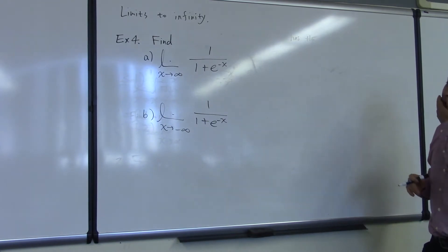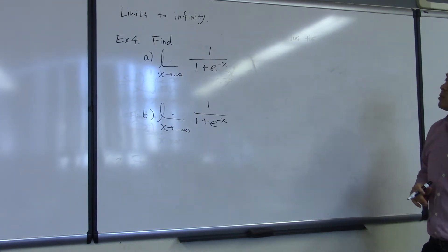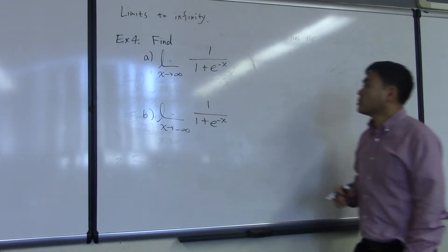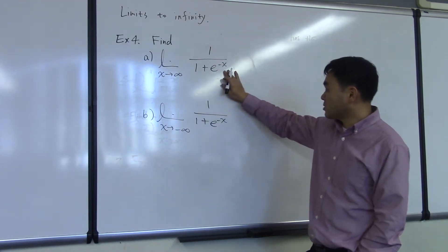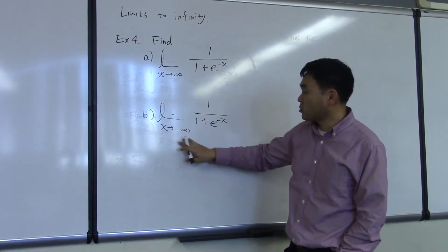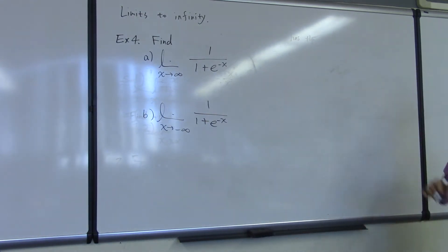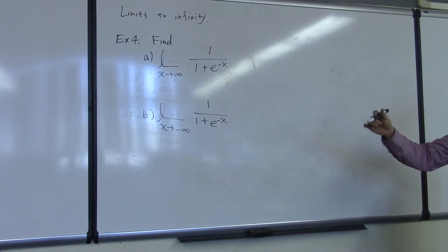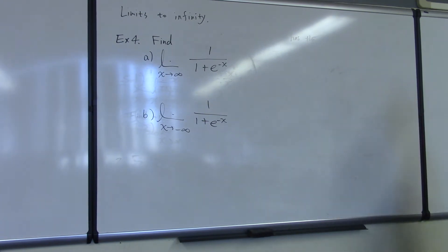Alright, so here we have two limit questions. The function is 1 over 1 plus e to the negative x, but we want to consider two different limits: one sending x to infinity, and one sending x to negative infinity.